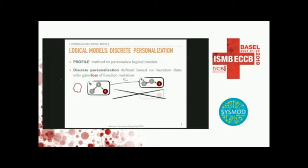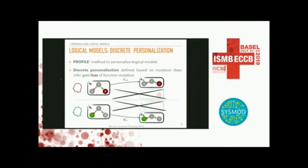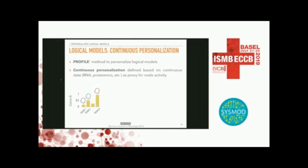The first strategy is straightforward: discrete personalization based on mutation data. We interpret the functional effect of mutations — there are databases and software for that. For a given patient, if a node has a loss-of-function mutation, such as a truncating mutation, then the transition where you activate that node is no longer possible, because we force that node to remain zero during the whole simulation. Conversely, if you have a gain-of-function mutation, you force that node to remain one — active — during the whole simulation. In a way, you overwrite the logical rule by forcing a node to keep its initial state.